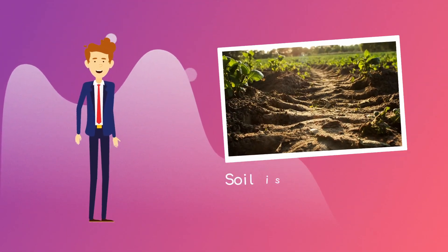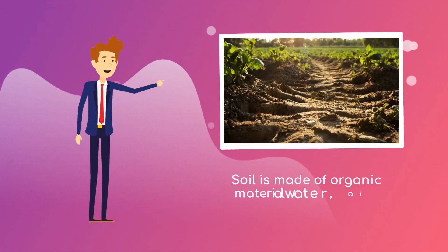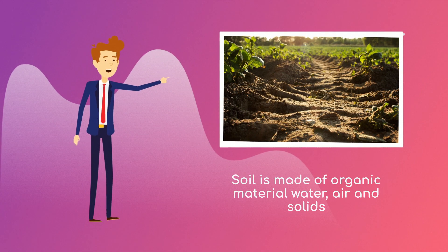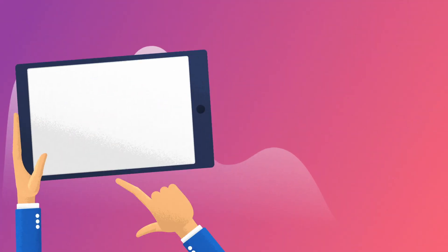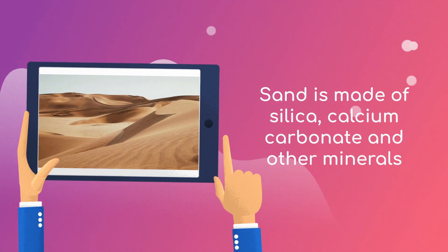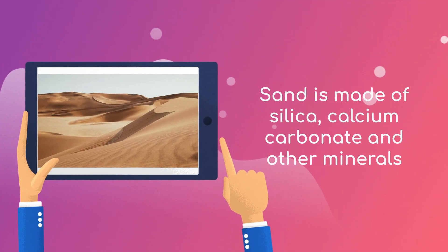Soil is made of organic material, water, air, and solids. Sand is made of silica, calcium carbonate, and other minerals.